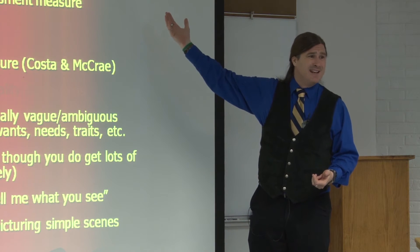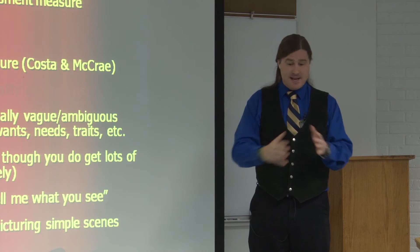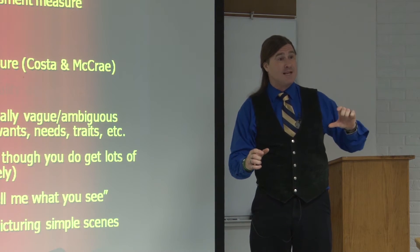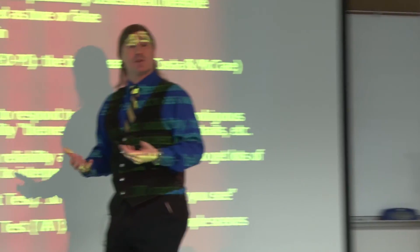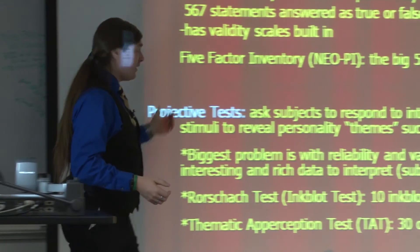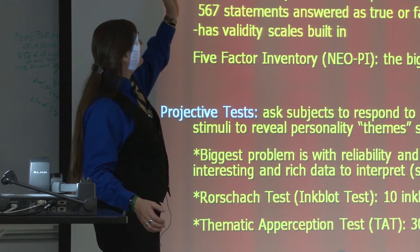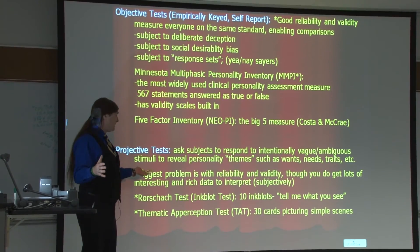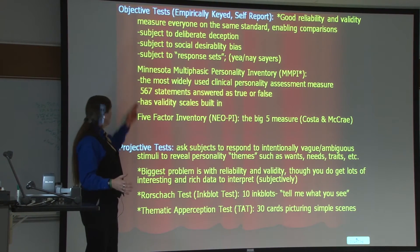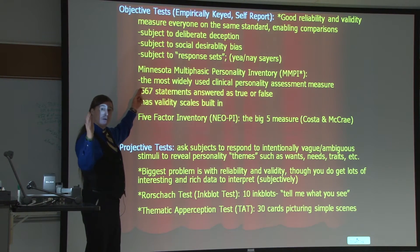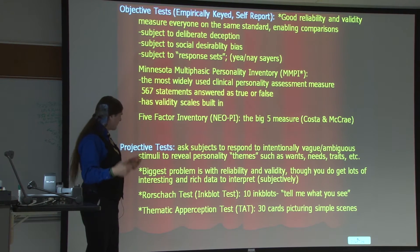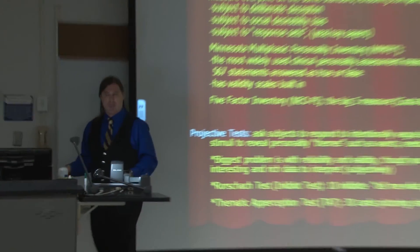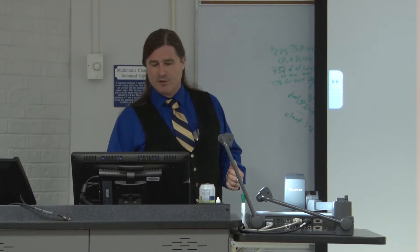With the objective test, one question does not tell you anything about somebody's personality. It is the aggregation of data across lots of questions designed to measure very specific things that gives us confidence we're measuring a personality construct. For the test and for your own general knowledge: objective tests have good reliability and validity; demonstrating reliability and validity is one of the biggest challenges for projective tests. The Minnesota Multiphasic Personality Inventory — the MMPI — is your objective test icon, and the Rorschach inkblot and the TAT are your icons for projective tests.